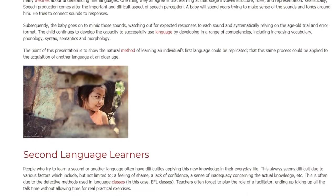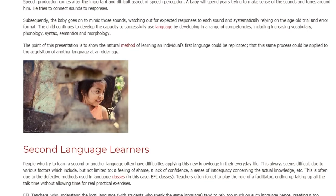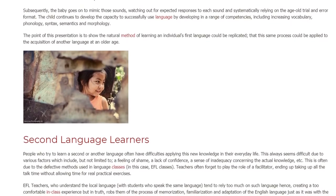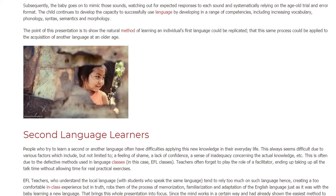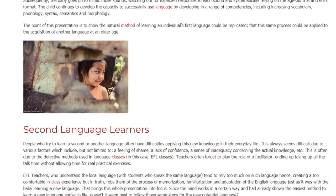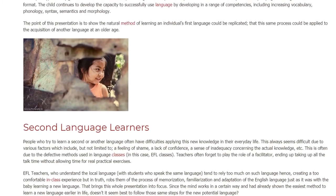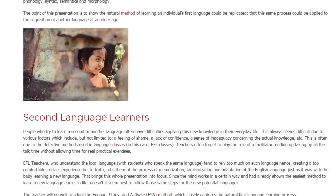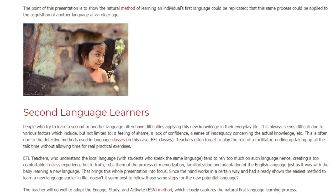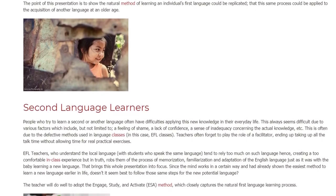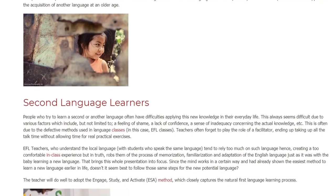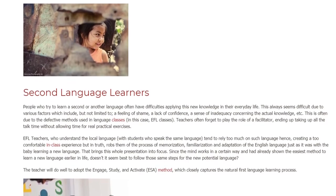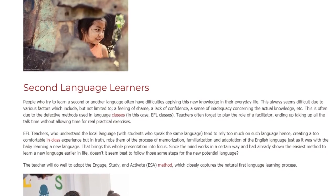The child continues to develop the capacity to successfully use language by developing a range of competencies, including increasing vocabulary, phonology, syntax, semantics, and morphology. The point of this presentation is to show that the natural method of learning an individual's first language could be replicated — that this same process could be applied to the acquisition of another language at an older age.